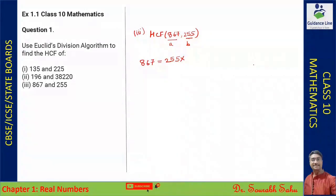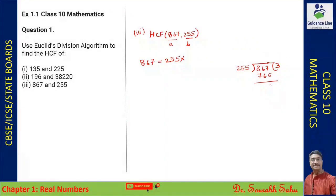Dividing 867 by 255: 255 × 3 = 765, and the remainder is 102. So we can write 867 = 255 × 3 + 102.